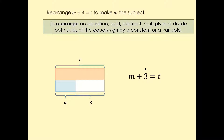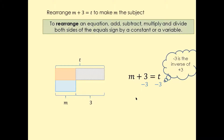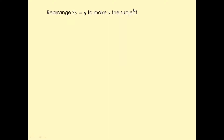So what we have to do is move plus three to the other side. When you move plus three to the other side, that is going to become minus three. So do minus three on both sides. So plus three and minus three are going to cancel. And your answer would be m equals t minus three, over two.